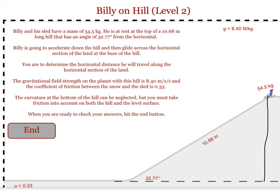When Billy gets to the bottom of the hill, the energy that remains will be his potential energy due to gravity that he started with, minus the work that was done on the hill. As Billy continues to slide along the horizontal, he will continue to lose energy due to friction.